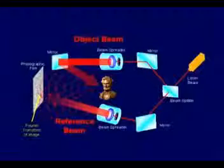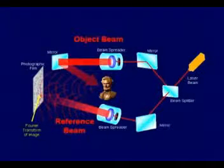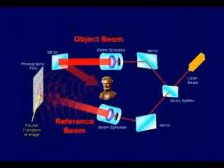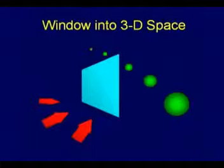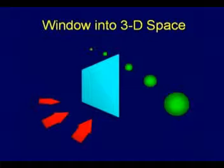Some people call it lensless photography — it's a little misnomer because you do have some lenses trying to organize the light to get it where you want it. The point is, what's on the film is mathematically a Fourier transform of the image. It's not in the space domain; it's in the frequency domain. And that has some profound implications. It acts like a window in three-dimensional space. As we look at a hologram and move our eye around, you can look around things.